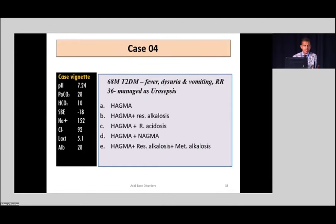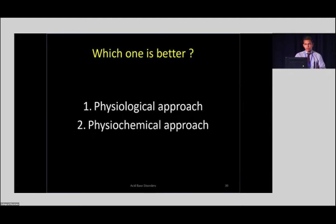Time is up. I think a traditionalist might struggle to work out this blood gas because you need to calculate the anion gap, delta ratios, and so on. But the Stewart camp might find it quite easy to analyze using the method I'm going to discuss next. We have about 20 more minutes. This physiological approach is the traditional approach that we have been following, and there was a huge debate about which is better — physiological or physicochemical. The physicochemical approach is the one introduced by Stewart.